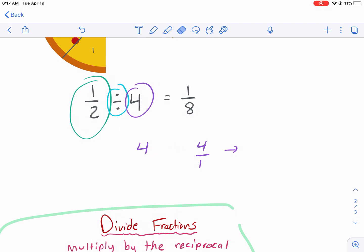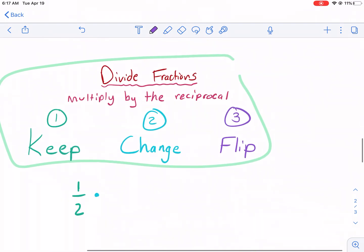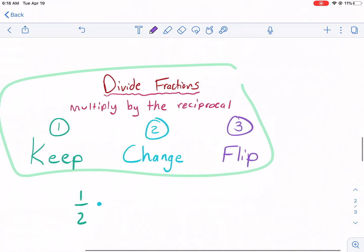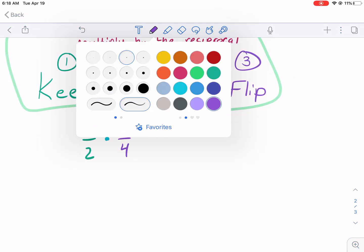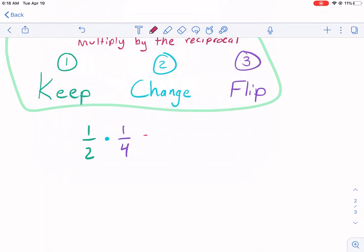And then when we change this to the reciprocal, we just flip the numerator and the denominator. Pretty simple there for the flip part. So we change this to 1/4. Keep, change, flip. And now we just do our multiplication rule. So 1 × 1 and then 4 × 2 is eight. So that's the process.